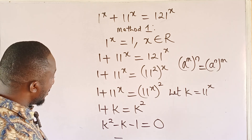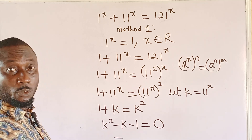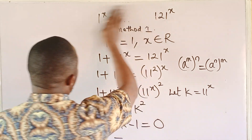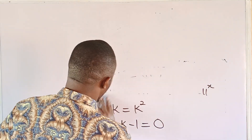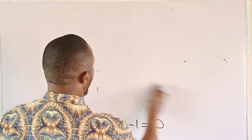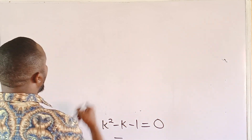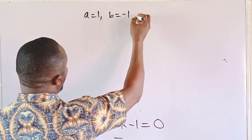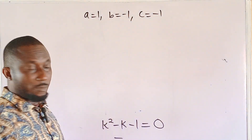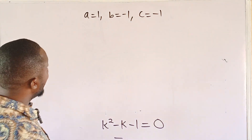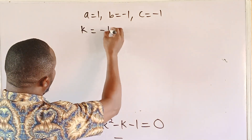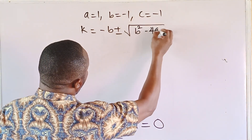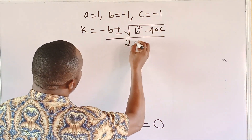This is a quadratic, so we shall use the quadratic formula. We have a equal to 1, b equal to negative 1, c equal to negative 1. k is then going to be negative b plus or minus the square root of b² minus 4ac, all upon 2a.